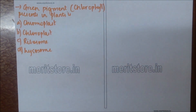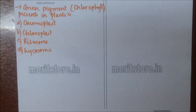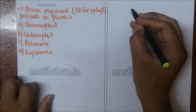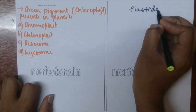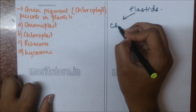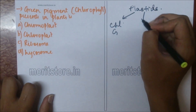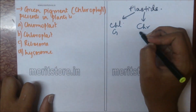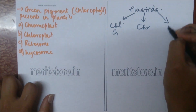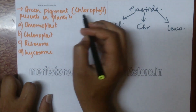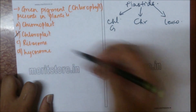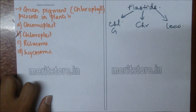The green pigment chlorophyll is present in plant: A) chromoplast, B) chloroplast, C) ribosome, D) lysosomes. Plastids consist of three types: chloroplast contains green pigment, chromoplast consists of other colors, and leukoplast consists of white color pigment. So green pigment chlorophyll is present in chloroplast.